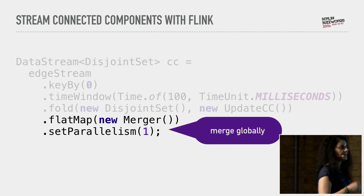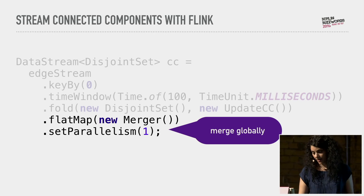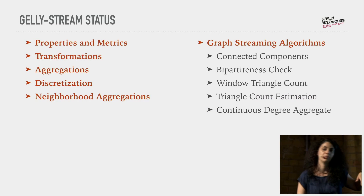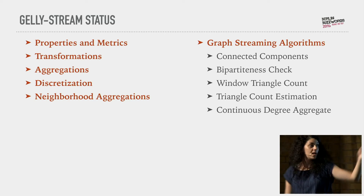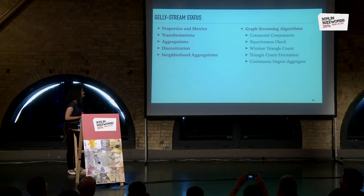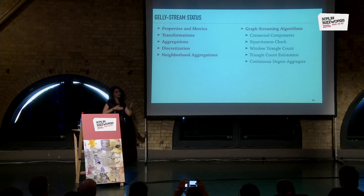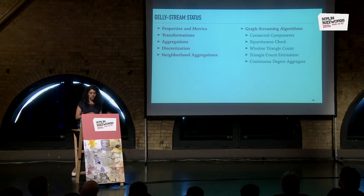With the API we have built, you don't even need to do all of this manually, because we have built several algorithms you can use just by calling the library method. So in addition to connected components, you can also do bipartiteness check, triangle count estimation, window triangle count, and some other continuous aggregates. We also have more high-level abstractions — the pattern of local states that get merged periodically is common across several algorithms, so we offer an abstraction to build this kind of algorithm more easily.